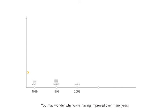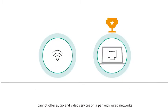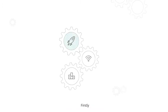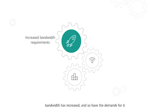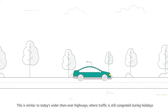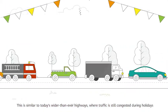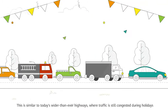You may wonder why Wi-Fi, having improved over many years, cannot offer audio and video services on a par with wired networks. There are three main reasons. Firstly, bandwidth has increased, and so have the demands for it. This is similar to today's wider-than-ever highways, where traffic is still congested during holidays.